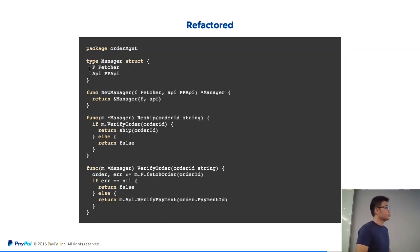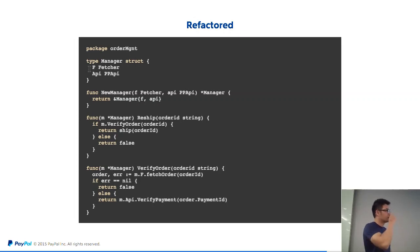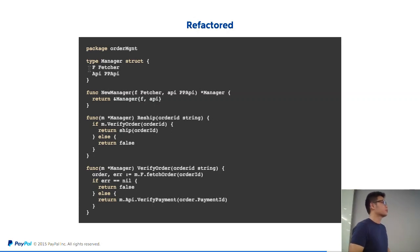Q: What if Reship only needed Fetcher and API and not verify order — would you put it as an argument then? A: Oh yeah, of course.